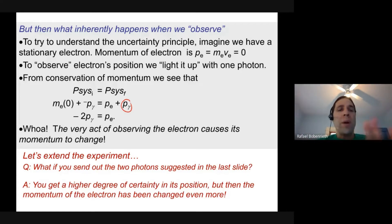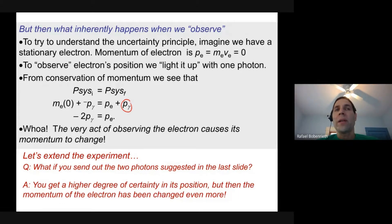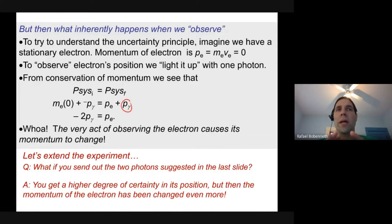Answering a student question: the electron's momentum after the collision is negative, not positive, because it's moving to the left — and we assigned left as negative. The p-value for the photon is a positive number, which makes the electron's solved momentum come out negative, consistent with it moving leftward.